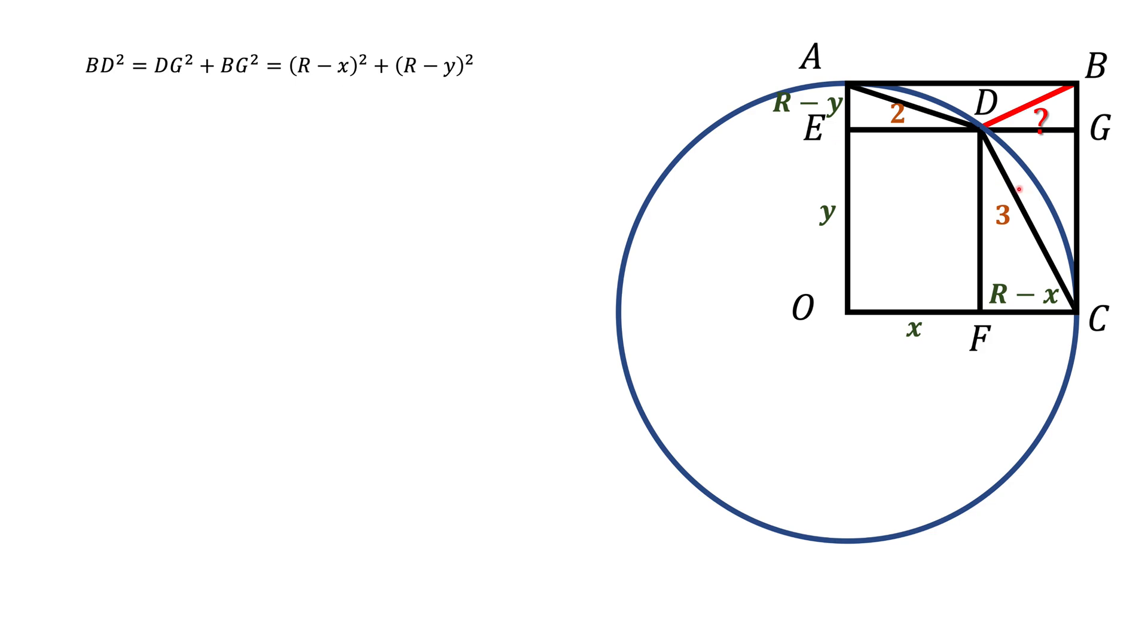Now let's look at the right triangle FDC and DAE and apply Pythagorean Theorem to those triangles. So for the triangle FDC, we know CD is 3, CF is R minus X, and DF is Y.